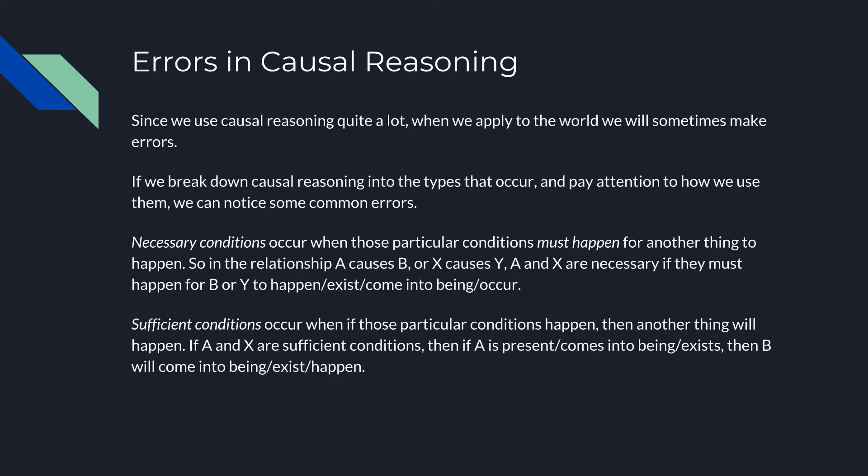Since we use causal reasoning a lot in almost every reasoning process, when we apply it to the world we'll sometimes make errors, and there are very common ones. So one way to prevent or notice those errors is to classify the different types of causal reasoning that we use. When we think of something A causing B or X causing Y, we want to classify the different types of causes that there are.